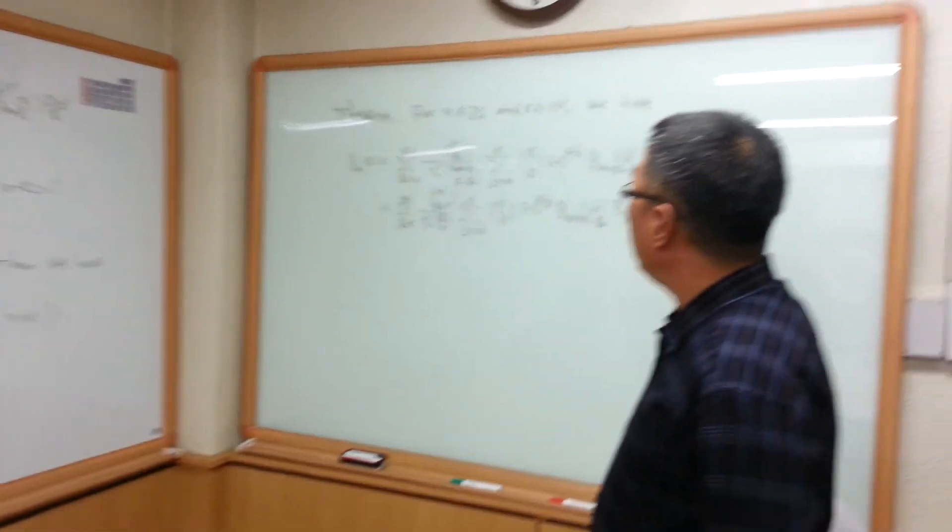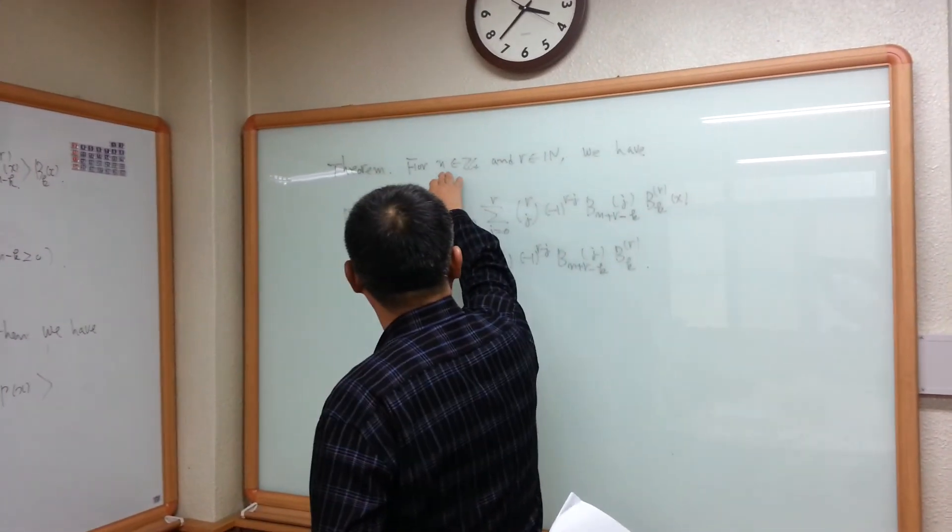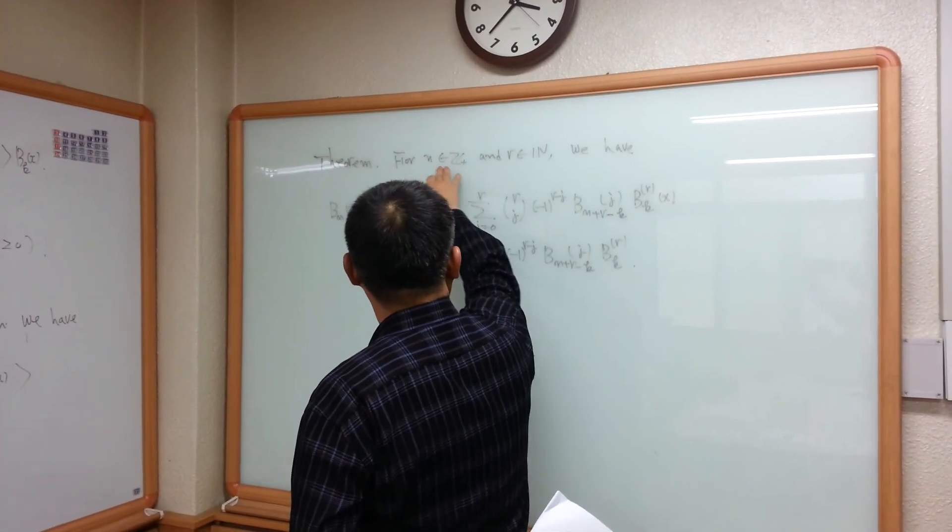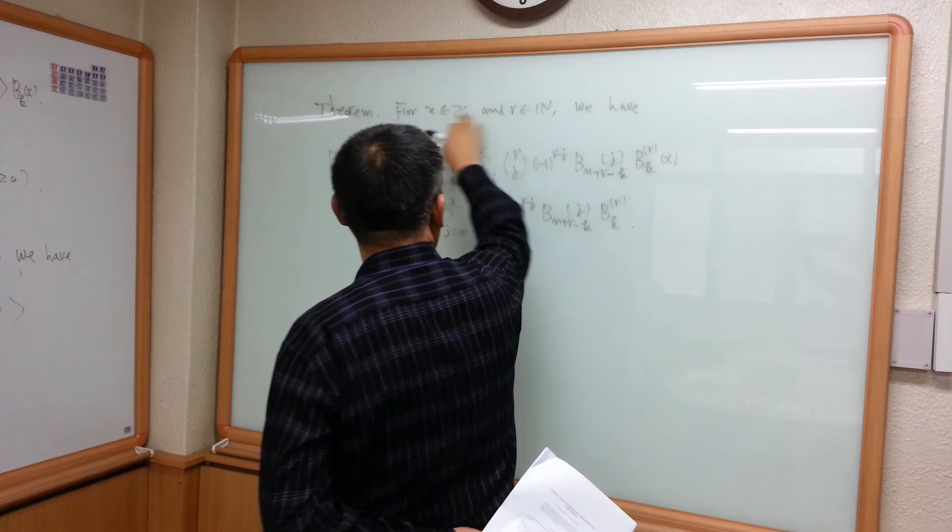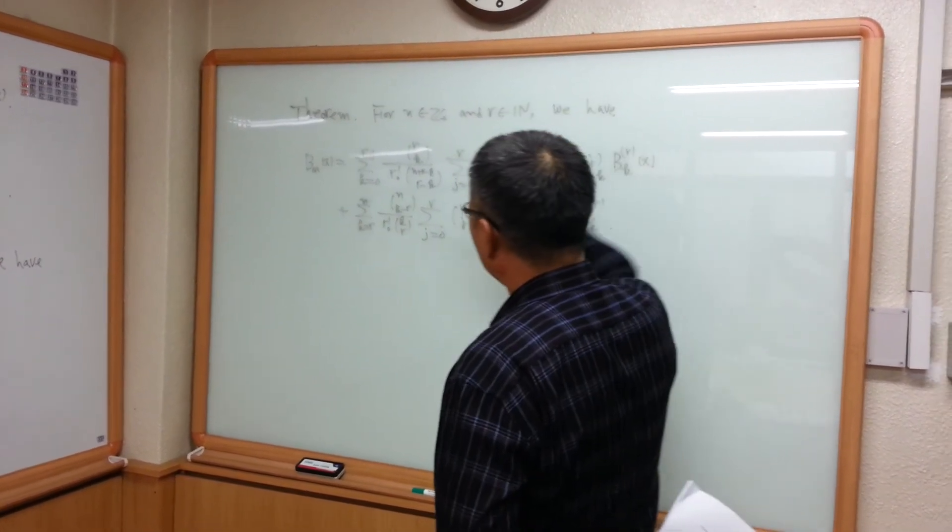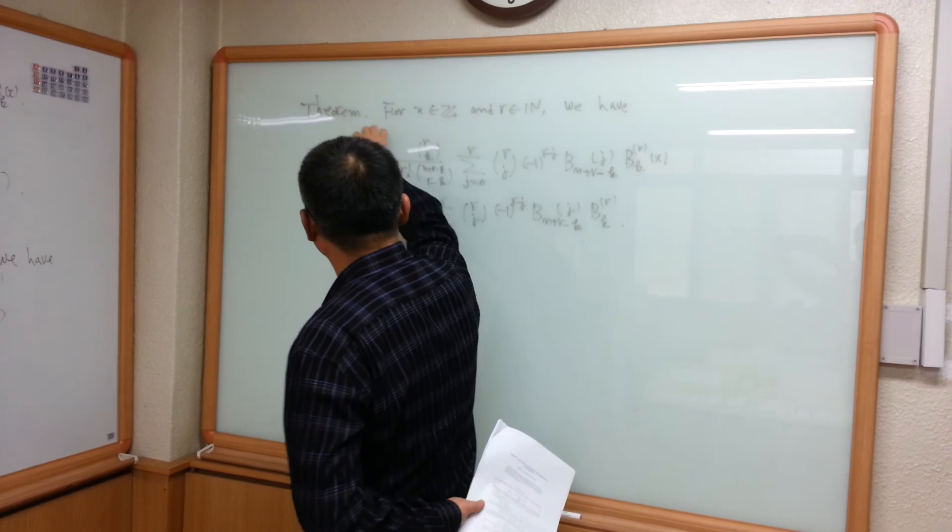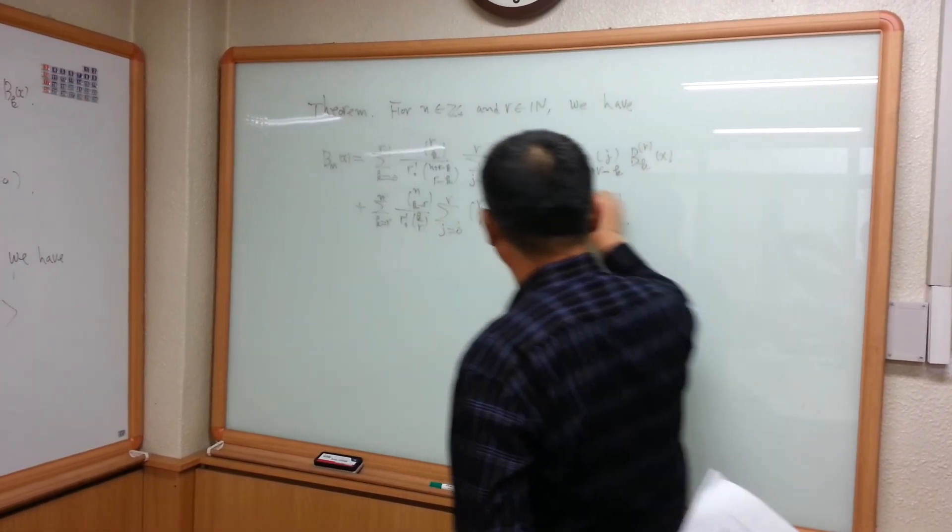The second main theorem: for n is a positive integer and R is a natural number, then we obtain the Bernoulli polynomials Bn^R(x) equal to formula like this.